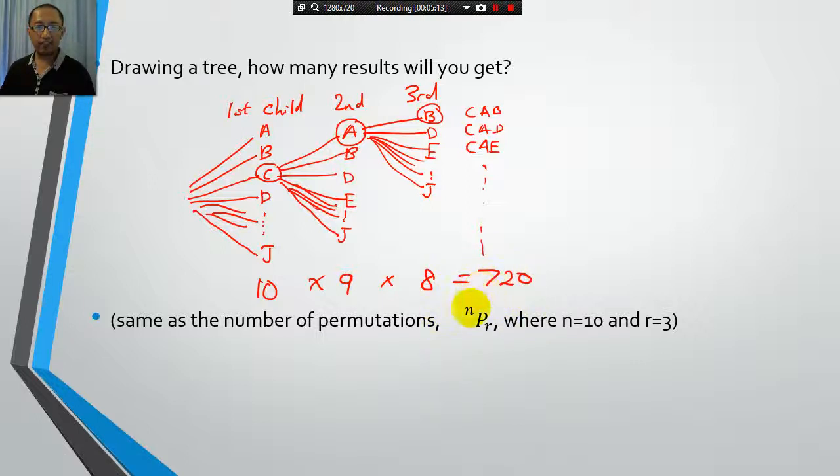Now notice how you didn't have to draw a tree, you could've just used the formula that we've discussed previously where n is equal to 10 and r is equal to 3, and you can just type in 10P3 in the calculator and that will give you how many different permutations there are when you pick 3 objects from 10 objects. So we have 720 ways.